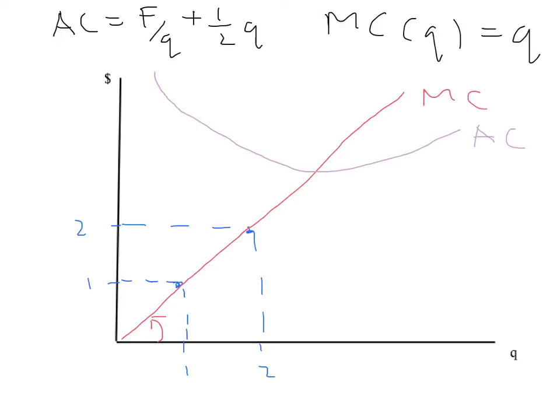You could work out exactly where this intersection is by setting average cost equal to marginal cost. You'll find it depends on the value of the fixed cost. Let's do one simple example — the special case where the fixed cost is equal to zero.